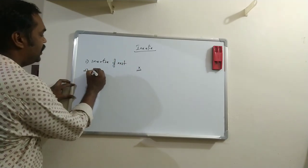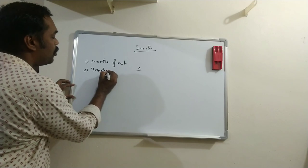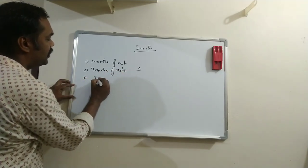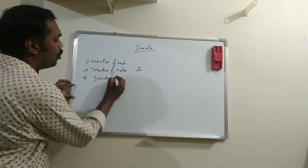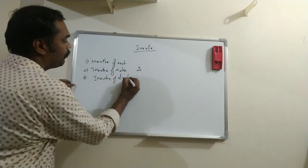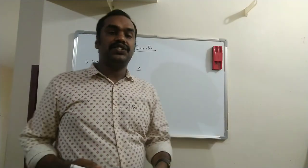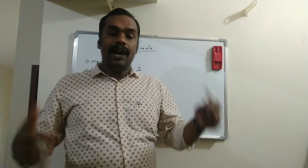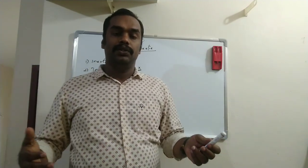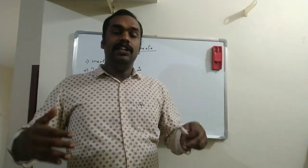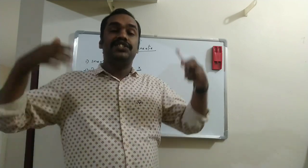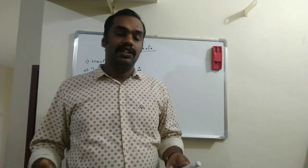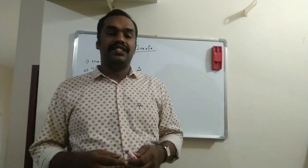There are types of inertia: this is the inertia of motion, and this is the inertia of direction. The inability of an object to change its state of rest, or the tendency of an object to remain in its state of rest, is called the inertia of rest.